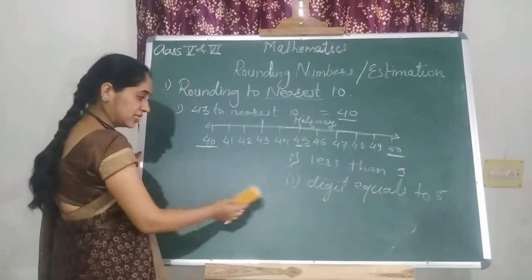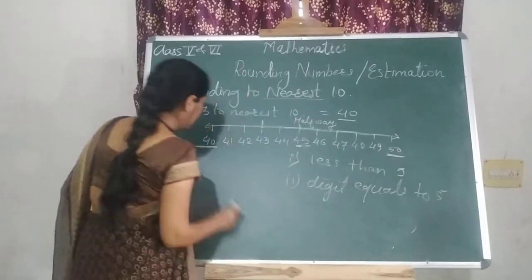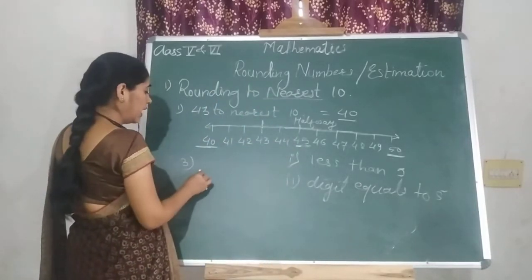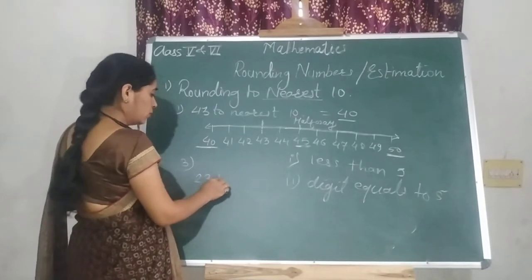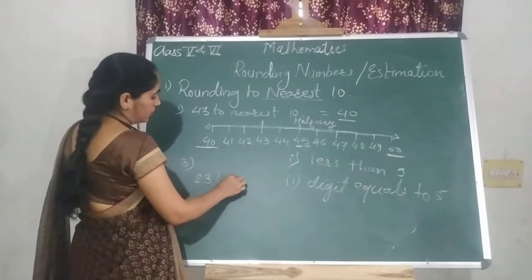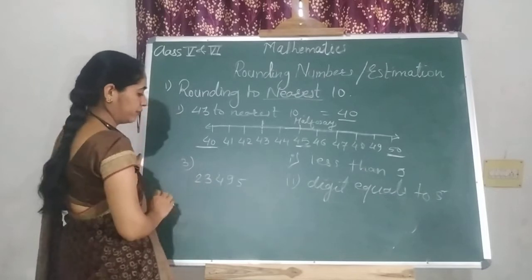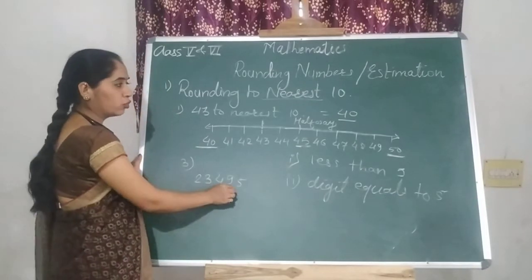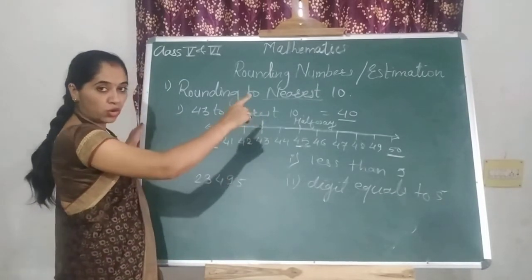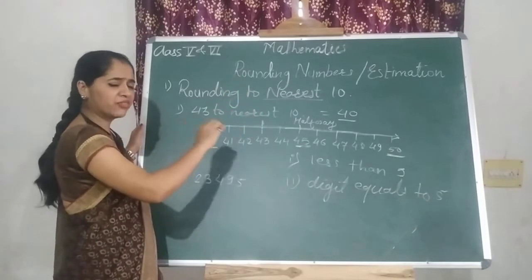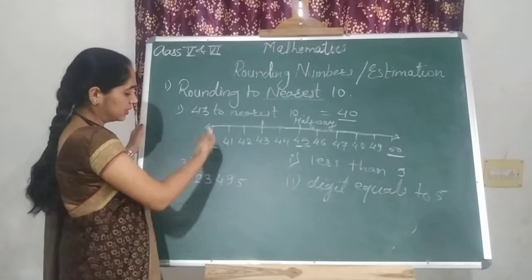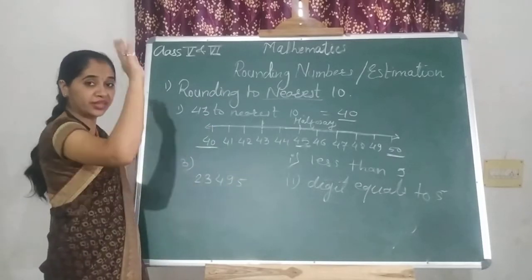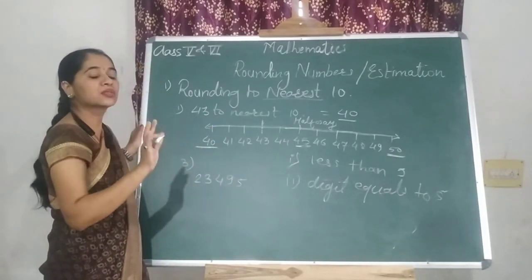I will give one more example of this 9. Suppose you have 23,495, and you have to round off to nearest 10. Right now we are talking about nearest 10 only. It's very easy. Once you understand the rule, how to apply, then it's very easy. Nearest 10, nearest 4, both are same.